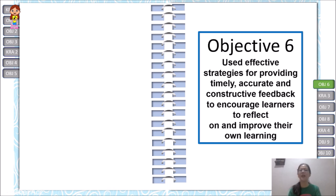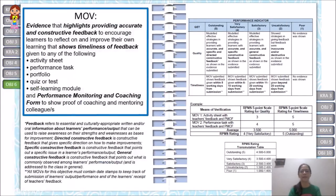Objective 6 — used effective strategies for providing timely, accurate, and constructive feedback to encourage learners to reflect on and improve their own learning — is similar to the proficient teacher version. The key difference is that highly proficient teachers always include a PMCF and always model. One PMCF is required for this objective.